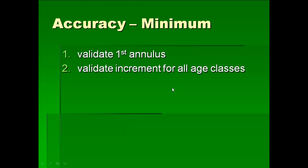Okay, then once you've validated the first annulus, the other minimum thing you need to do is validate the increment for all age classes. So what this is saying is you might never have known age fish where you can validate the actual age, but at least you can validate the first annulus, and then you can do mark recapture of the adults to validate that the annuli are being laid down at other older age classes in much the same way.